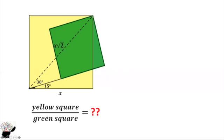We can represent the side of the green square by z. Then we can use trigonometry. Now we know that this side is the opposite and this one side is the hypotenuse. So we can use sine.